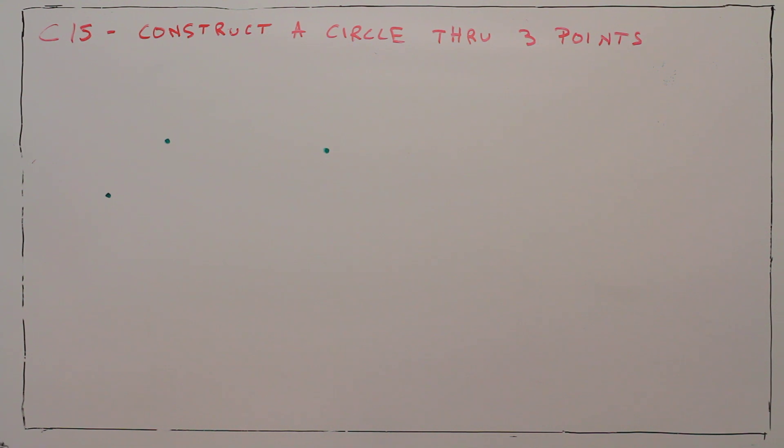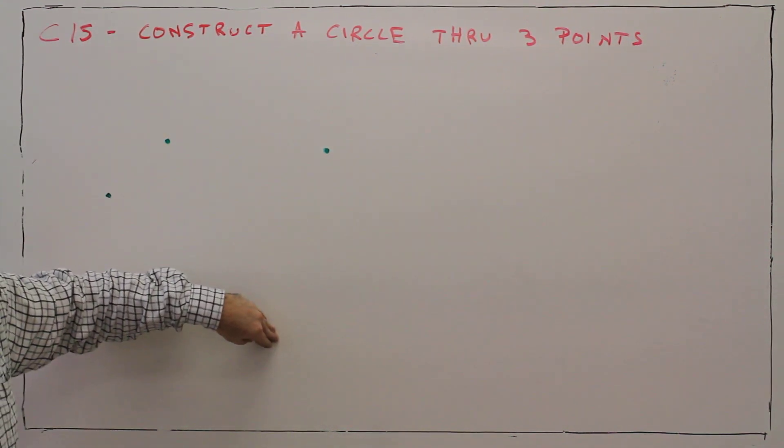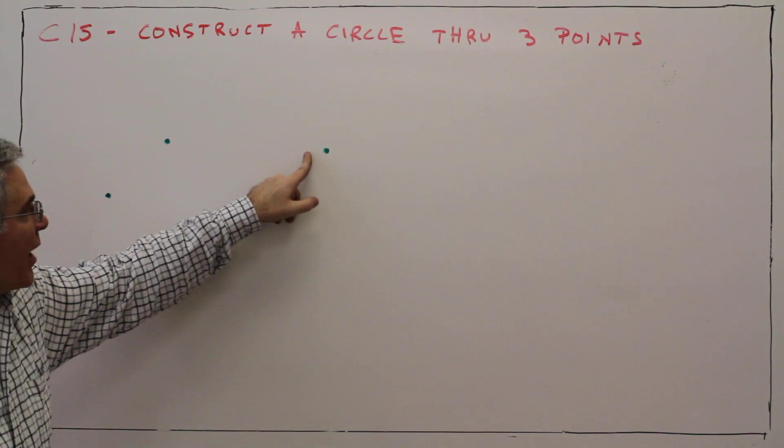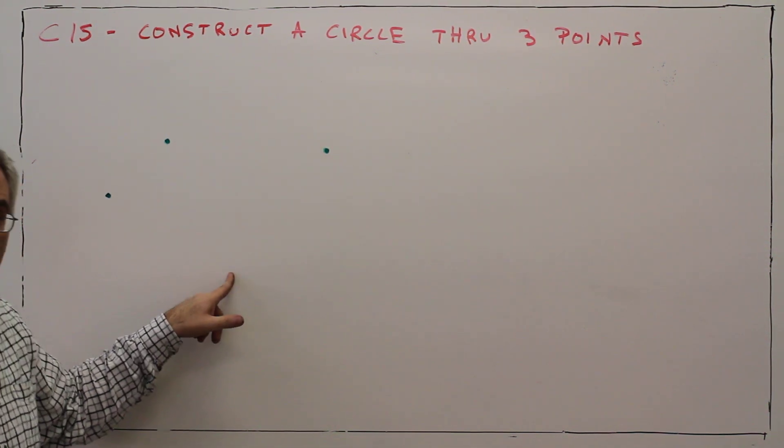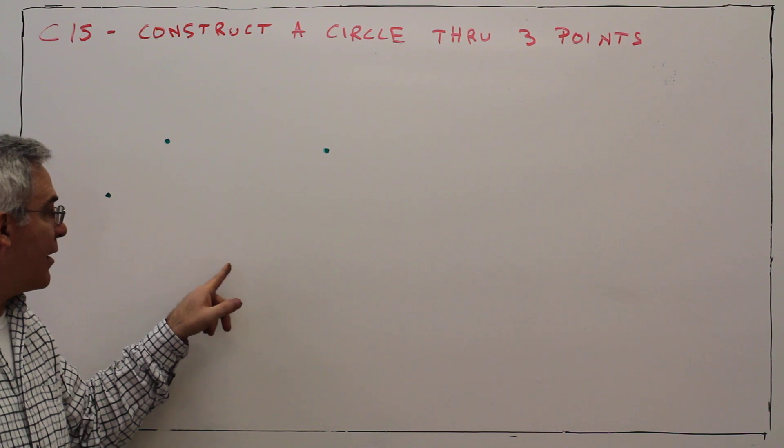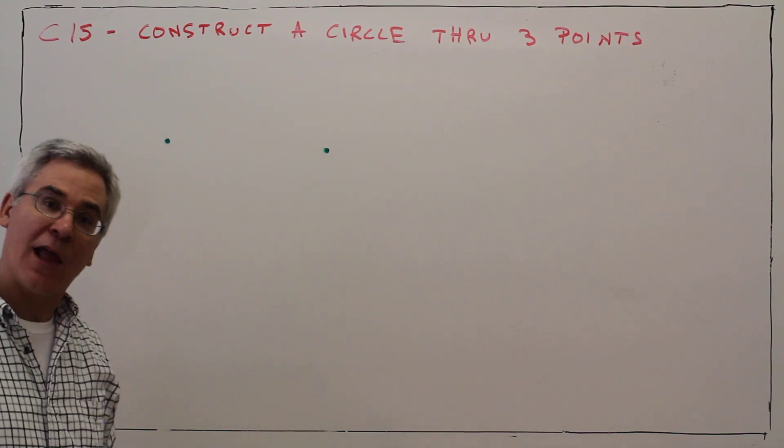Okay, so all we're going to do is draw a segment, construct a perpendicular bisector, draw a segment, construct a perpendicular bisector. Where those two perpendicular bisectors meet, that's the center of our circle, and we're done.